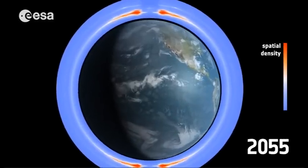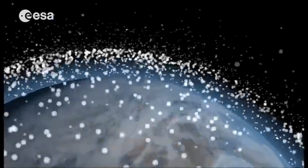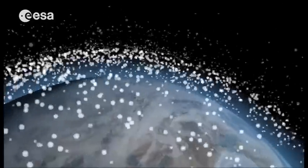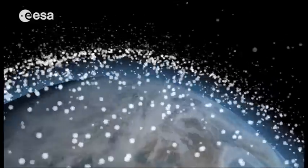The Earth's upper atmosphere below these altitudes prevents debris from remaining in space for long periods of time. The objects are slowed down by the atmosphere, causing them to lose height and burn up on re-entry.